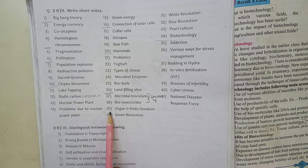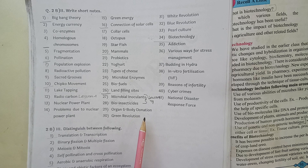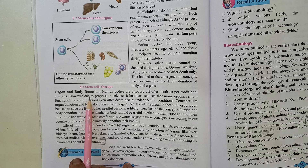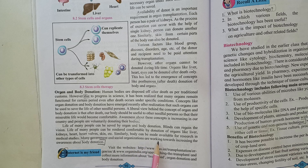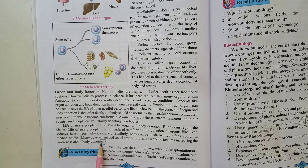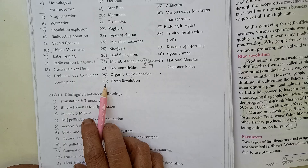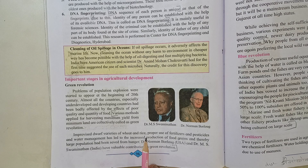Question 29: Write a short note on organ and body donation. This answer is on page 90. Starting from 'Due to progress in science' up to 'Many government and social organizations are working towards increasing the awareness about body donation.' Write both paragraphs — skipping the first sentence and writing the remaining two paragraphs.